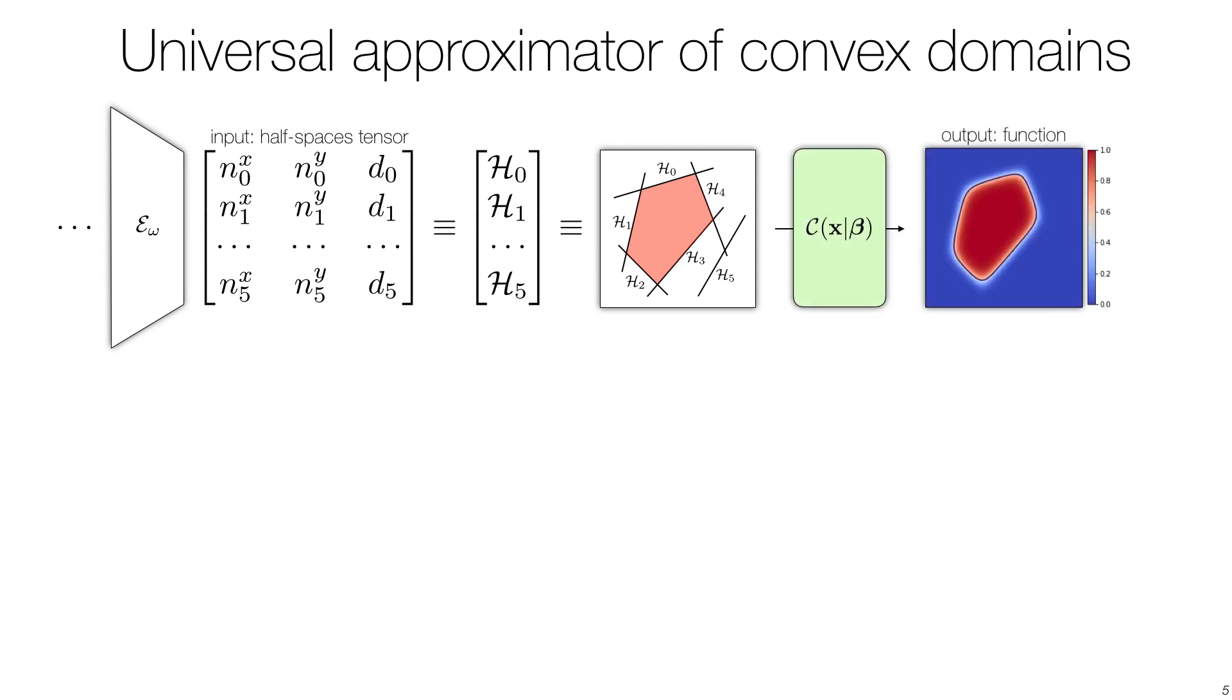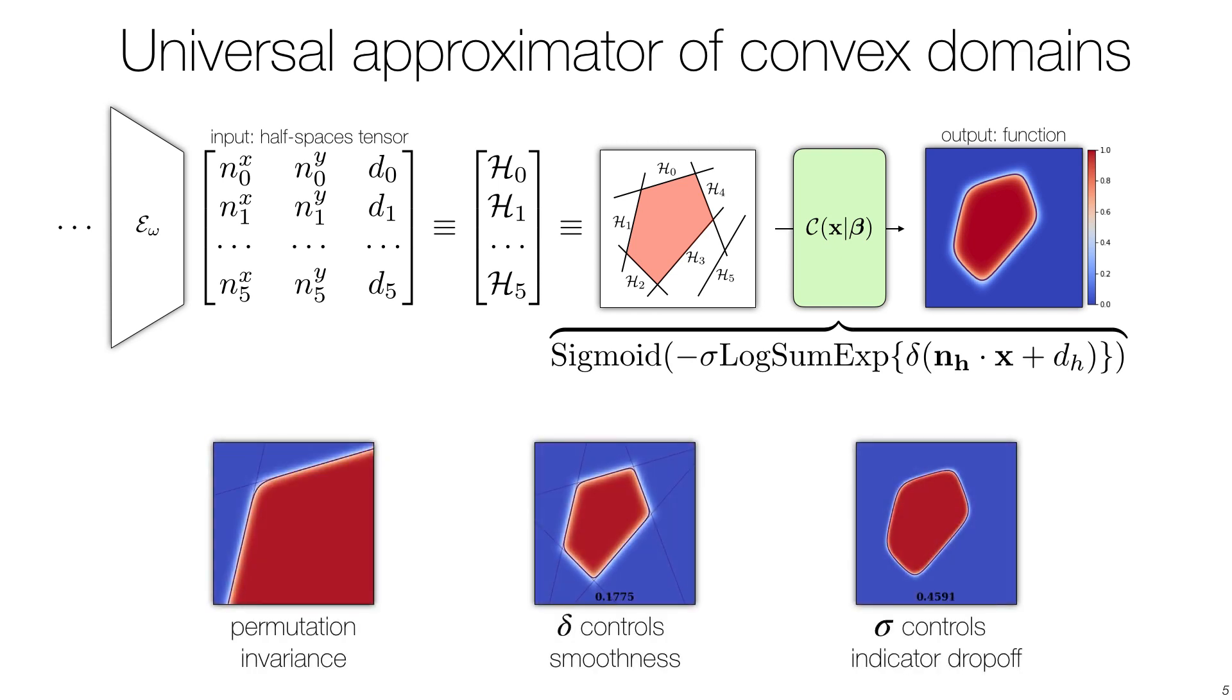Further, we introduce a layer representing the corresponding indicator function. The animation at the bottom highlights the properties of this non-parametric differentiable layer, where we highlight the permutation invariance and smoothness properties that are beneficial to training.